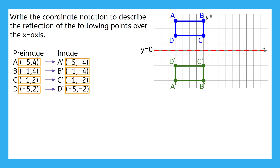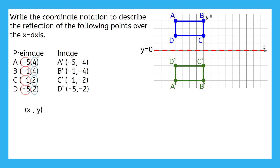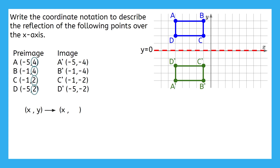Hopefully, you figured out that the x values stayed the same and the y values switched signs. Let's write the coordinate notation for this. We know we started with an x value and a y value for each of the points in our pre-image. We can write that as (x, y). Then we draw an arrow and write what happened to x and y. The x values stayed exactly the same, and we show that by just writing x again. Then we find a way to write what changes happened to our y values — they all changed signs. Positive y values became negative, and negative y values would have become positive. This is the coordinate notation to describe a reflection over the x-axis.